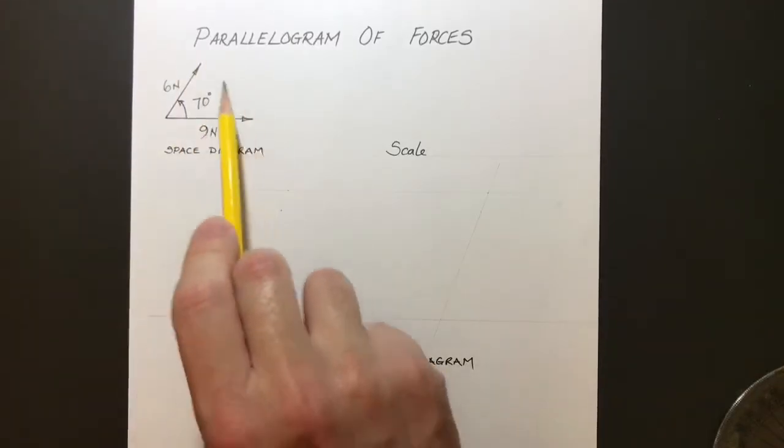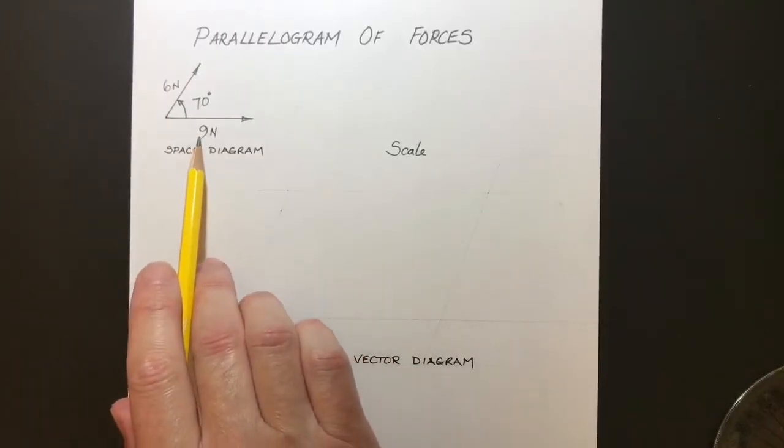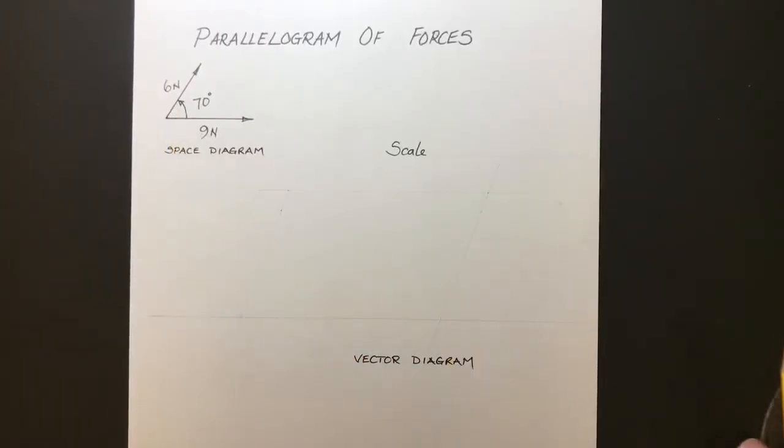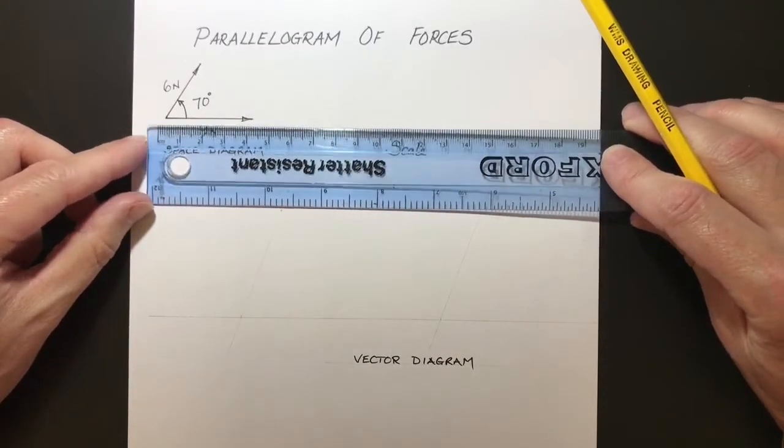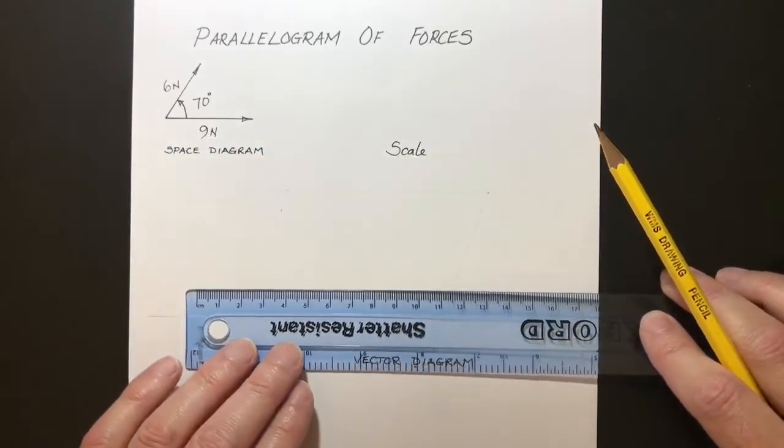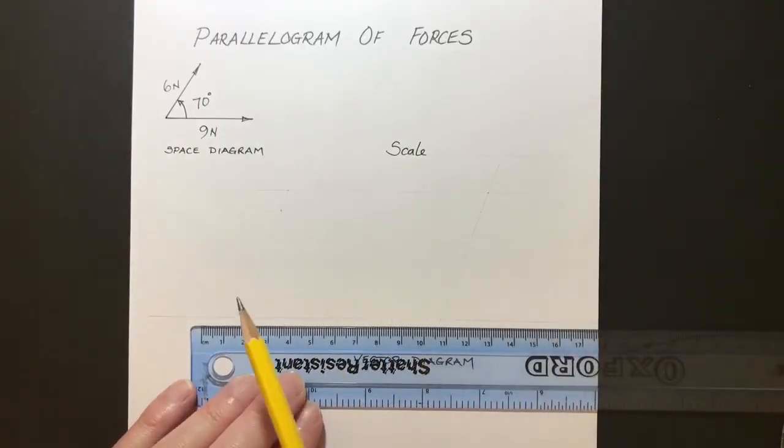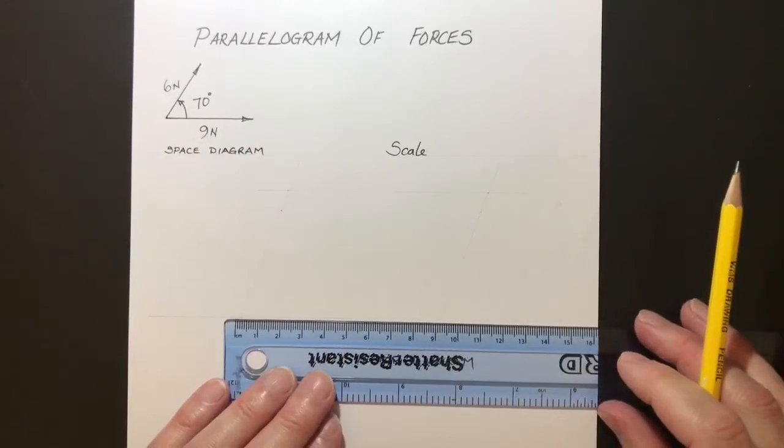Now that's the space diagram, so that's not drawn to scale. What we're going to do now is draw our vector diagram to scale. Let's have a look. What's the biggest force we've got here? That's nine Newtons. So let's have a look. Nine Newtons. Now on the space diagram it's quite small there. I think it's quite reasonable to say one Newton per centimeter. That would give us nine centimeters for that first vector there and I think that will fit on the page.